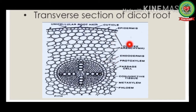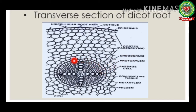Next to the epiblema is the cortex, which is made up of parenchyma cells. These are large thin-walled cells with intercellular air spaces. Water and minerals can pass through the intercellular spaces as well as the cell walls. Next to the cortex is the endodermis.